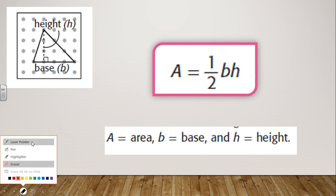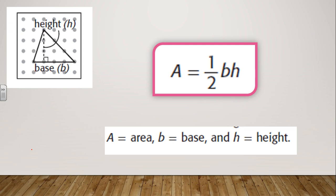The letter A represents area, B represents base, and H represents height. So: area of triangle equals half times base times height.